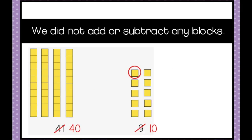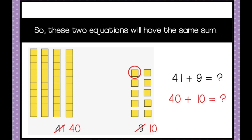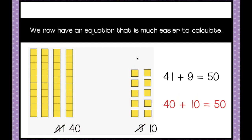You can see that we didn't actually add or subtract any blocks. All we did is take one away from here and add it over here. That's not going to change our sum at all. So these two equations will have the same answer. We started out with 41 plus 9, moved a block around so that now we have 40 plus 10, which equals 50. So we know that 41 plus 9 is also 50.